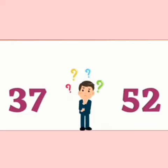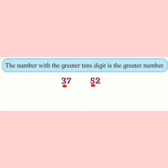How to compare two digit numbers? The number with the greater tens digit is the greater number. Here, 5 tens is greater than 3 tens.